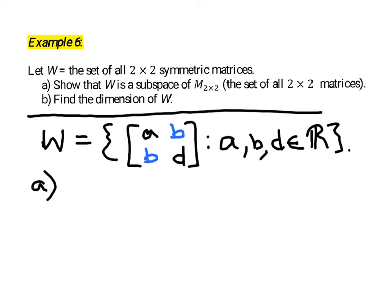So this is what W really looks like. Now our first task was to show that this is a subspace of the set of all 2 by 2 matrices. There's two ways to do this. One way might be the more traditional route, which is to show that this subset of a vector space satisfies three conditions: first, that the 0 vector is contained in the subset.